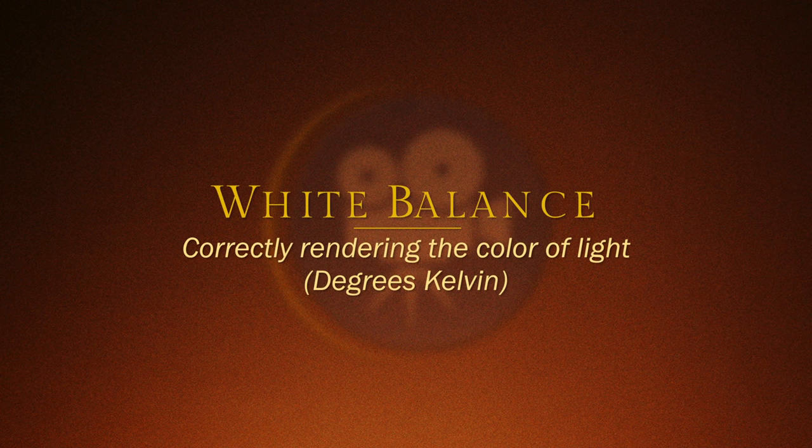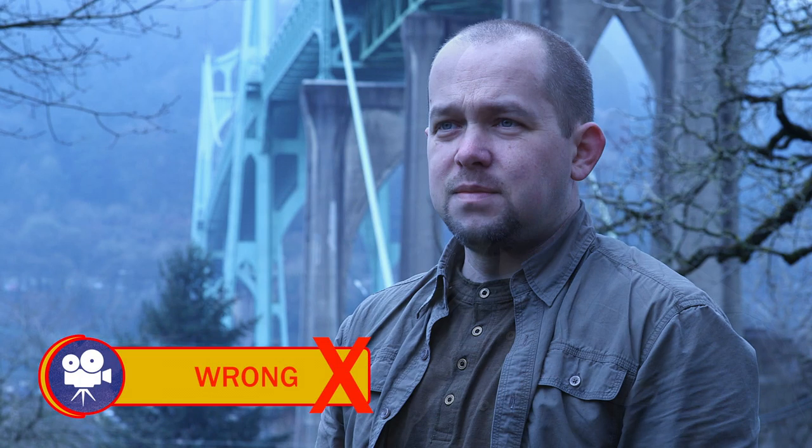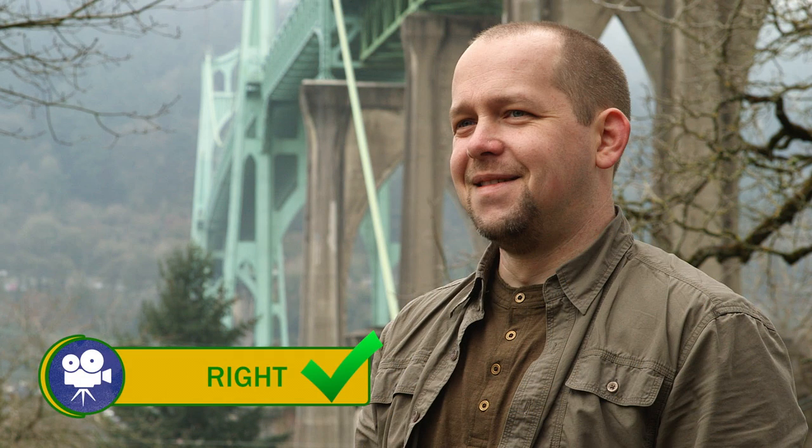White balance tells our cameras how to correctly perceive and render the color temperature of light. Our eyes are pretty amazing in that we can go from one environment to another and never notice any difference, as our eyes automatically adjust to the different color temperatures. Our cameras, on the other hand, need to be told what white light looks like. Otherwise the colors are going to look a little bit odd.